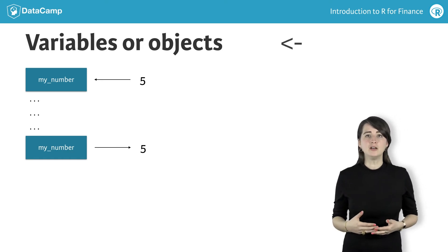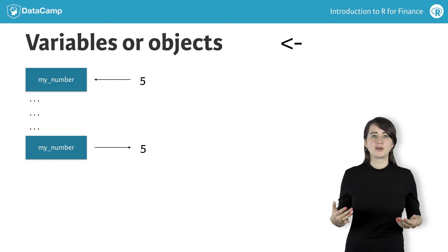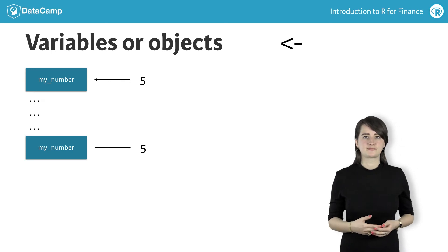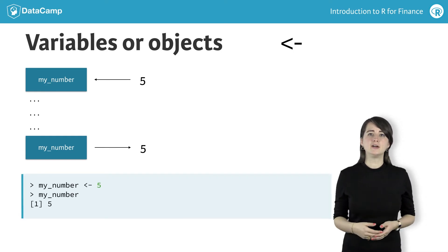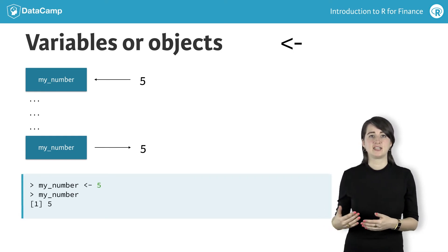To create a variable in R, use the less than sign, followed by a dash. This operation is known as assignment. What would this example look like in the R console? Type my_number, assign 5 to it, and press enter.